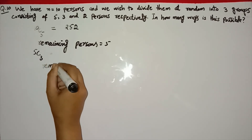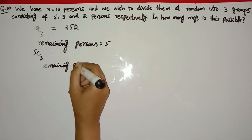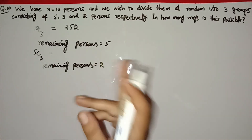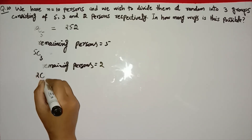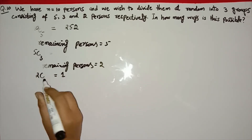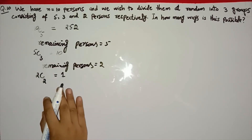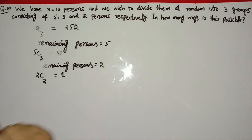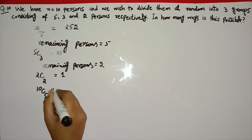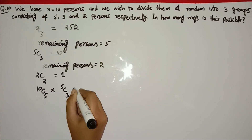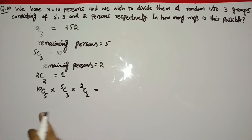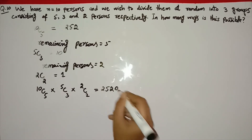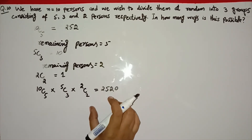We choose 2 persons for the last group, so that is 2C2 which equals 1. And 5C3 is 10. The total number of ways to partition into 3 groups is 10C5 multiplied by 5C3 multiplied by 2C2, which equals 252 multiplied by 10 multiplied by 1, giving 2520 number of ways. This is the rule of combination.